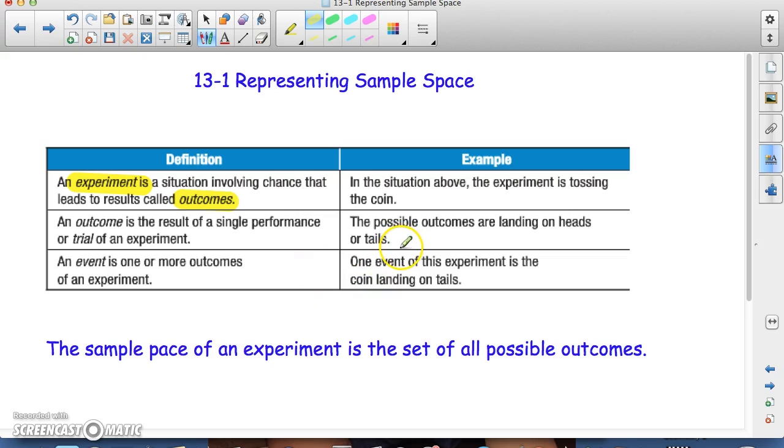An experiment is a situation involving chance that leads to results called outcomes. In the case that your book talks about, in a football game, flipping a coin at the beginning. So the experiment is tossing the coin.